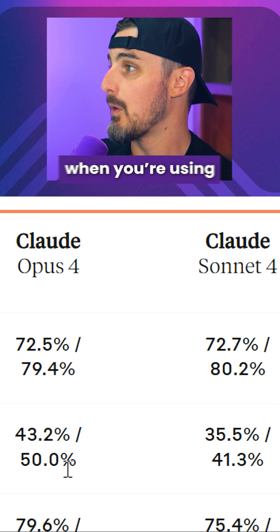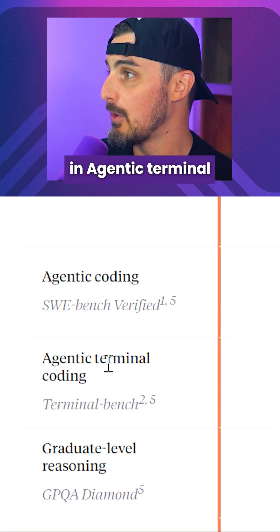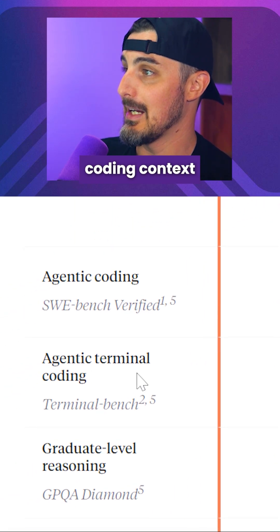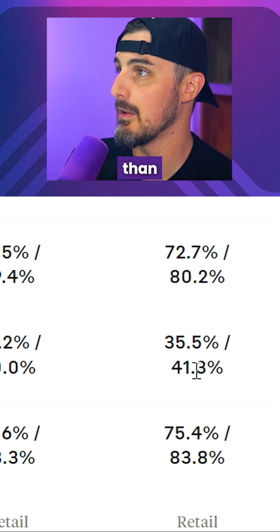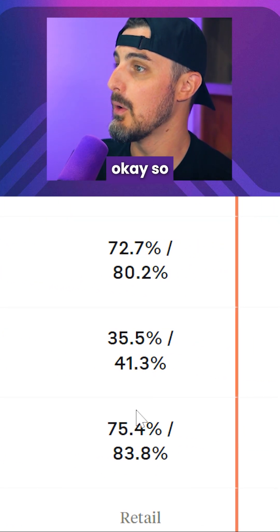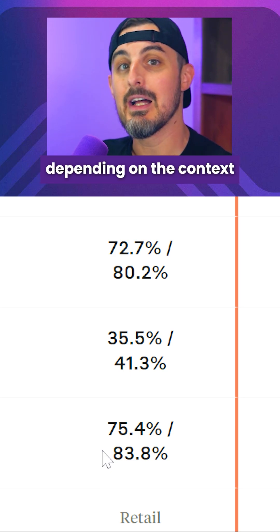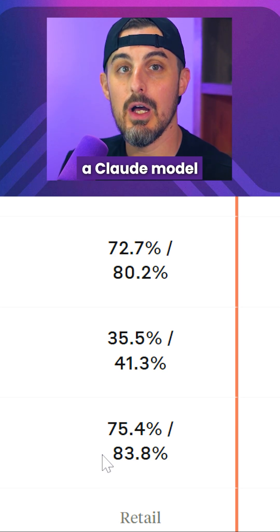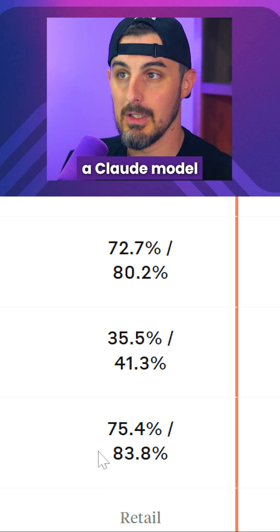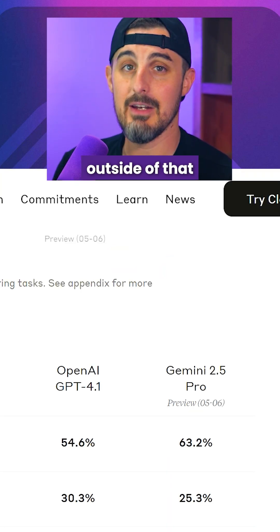However, when you're using Claude Opus 4 in an agentic terminal coding context, it's significantly better than Claude Sonnet 4. So basically, the context in which you're going to use a Claude model determines which model to use.